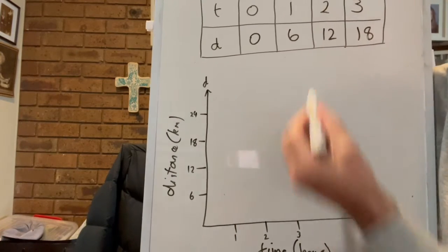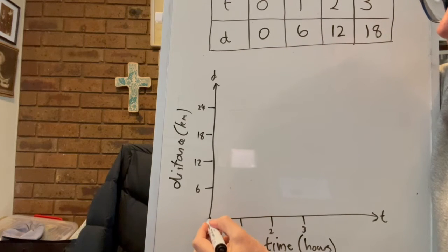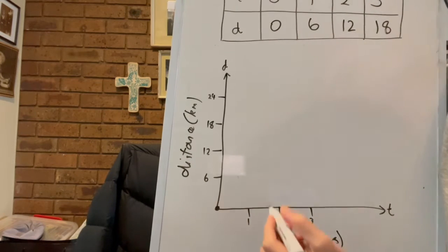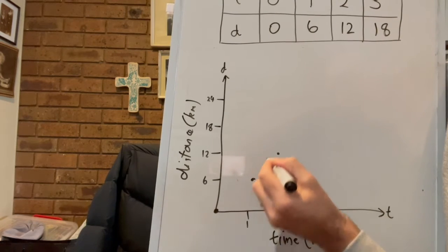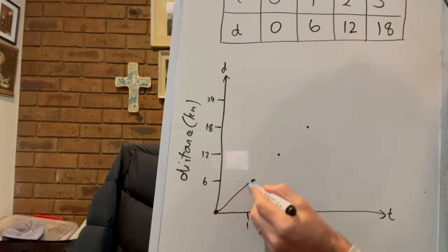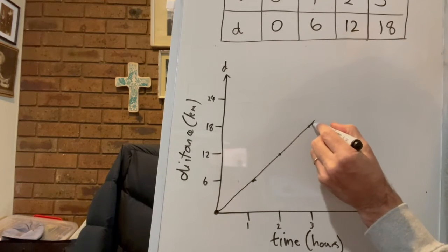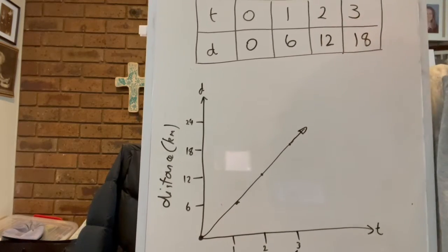So we can then put in these coordinates. So we've got zero zero, we have one and six, two and 12, three and 18 like this. And that creates for us a nice linear graph and we can see that that's going to keep going in that direction.